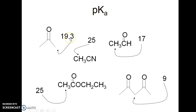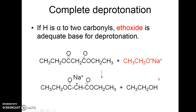The pKa of acetone is 19.3, acetonitrile is 25, and ethyl acetate's alpha proton pKa is also 25. Acetaldehyde is slightly more acidic than acetone. A double carbonyl compound where the carbon is alpha to both carbonyls has a pKa of 9 — much lower. Complete deprotonation occurs with ethoxide if you have two carbonyls; otherwise ethoxide is not strong enough for an aldehyde or ketone.